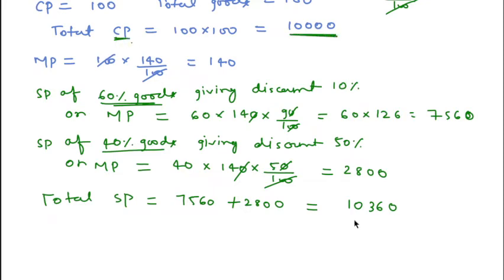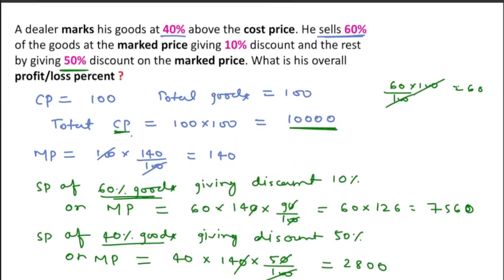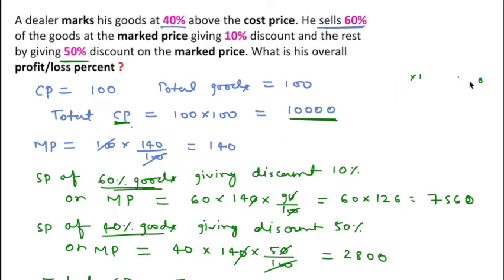Total cost price is 10000, and total selling price is 10360. This means profit is 360. Profit percentage will be 360 divided by cost price into 100, which equals 3.6%. So 3.6% is the answer for this question.